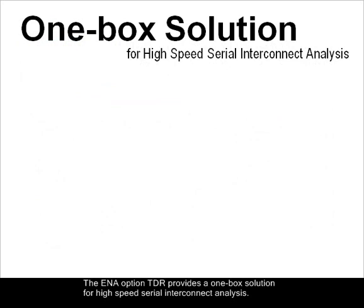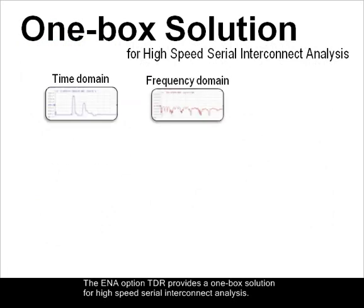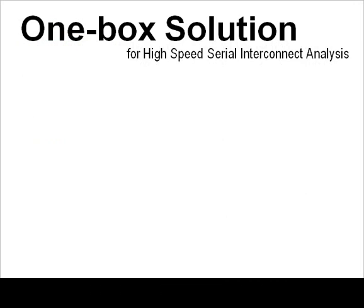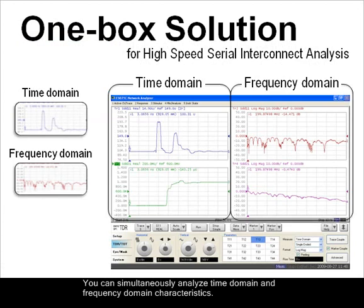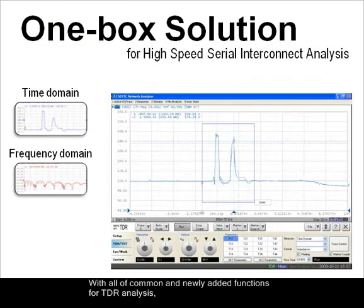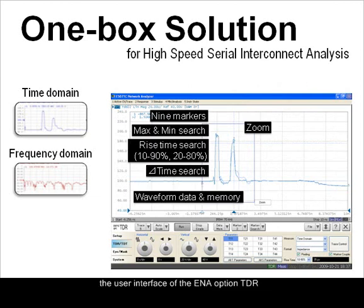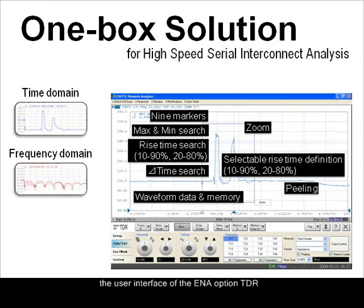The ENA Option TDR provides a one-box solution for high-speed serial interconnect analysis. You can simultaneously analyze time domain and frequency domain characteristics. With all of the common and newly added functions for TDR analysis, the user interface is designed to make setup, calibration, and measurements intuitive and error-free.